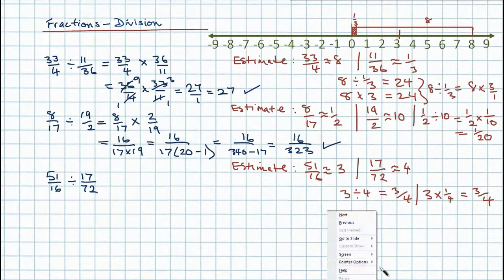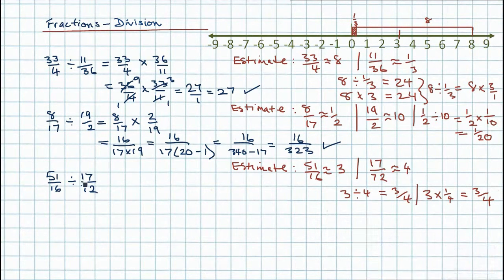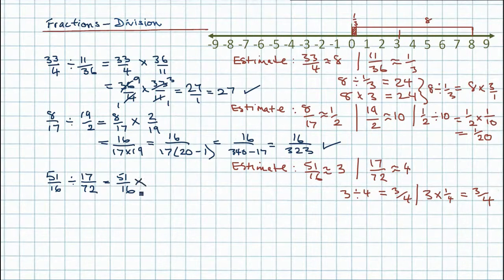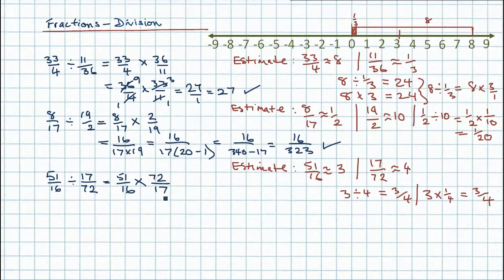Let's go back to the original problem. We've got 51 sixteenths — so we write that out to start with. Now, changing the divisor to a multiplier: I multiply now. I take my denominator and put it at the top — 72 becomes my numerator. And I take my numerator 17 to the bottom to become the denominator within the fraction.